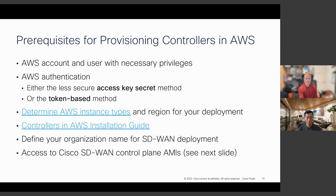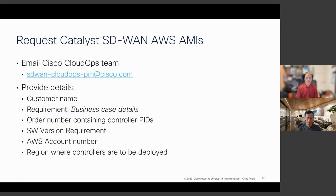You also need access to Cisco SD-WAN control plane AMIs. The Catalyst 8000 data plane is available in the AWS Marketplace, but the control plane is not. To experiment with this IaC approach for the control plane, you'll need to contact the Cisco CloudOps team, provide details about your deployment and planned use, and the AMIs will be shared with your account number.